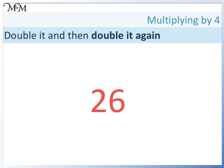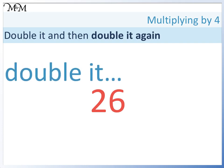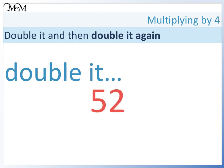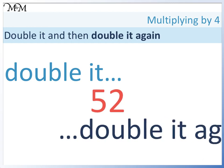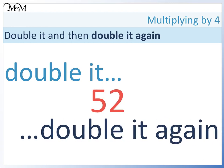What is 26 times 4? I need to double it. I know that double 25 is 50, so I can double the extra 1 to get 2. I add them together and I get 52. I double again and I get 104.